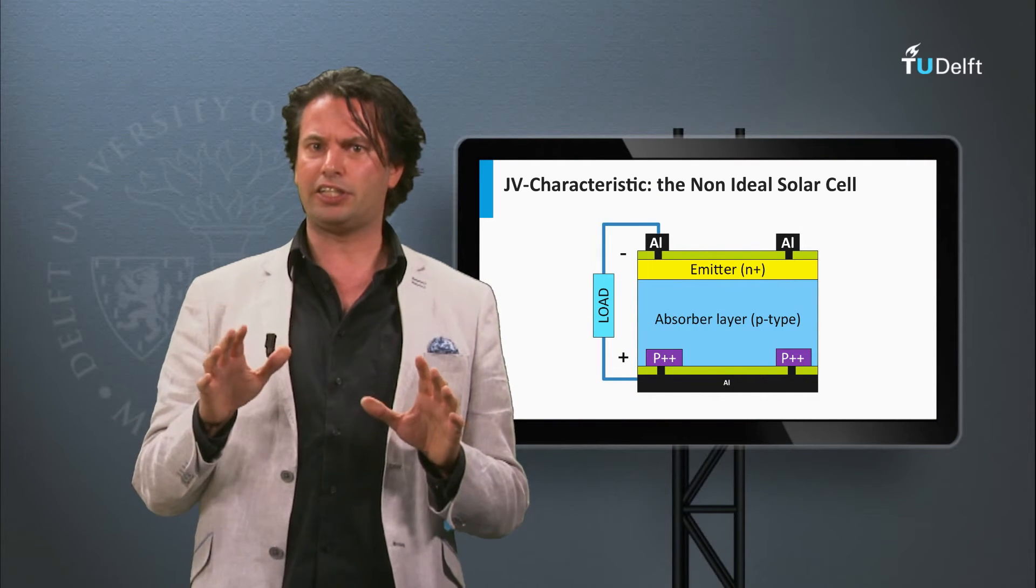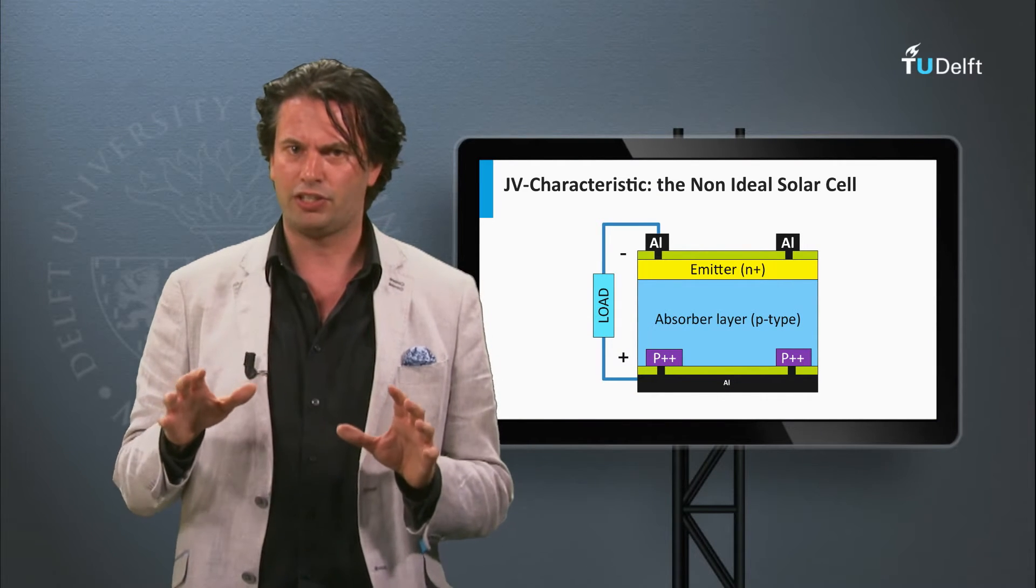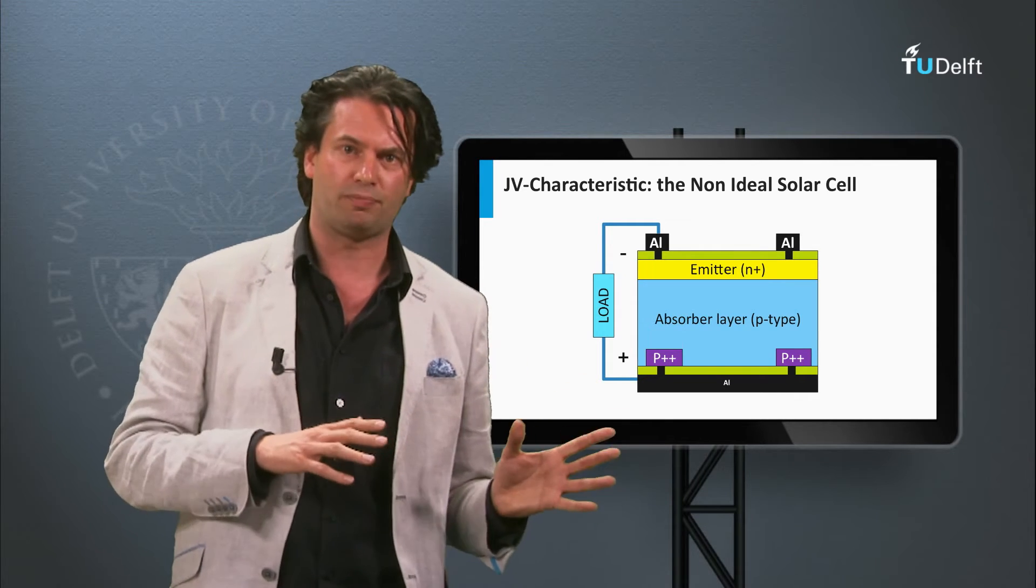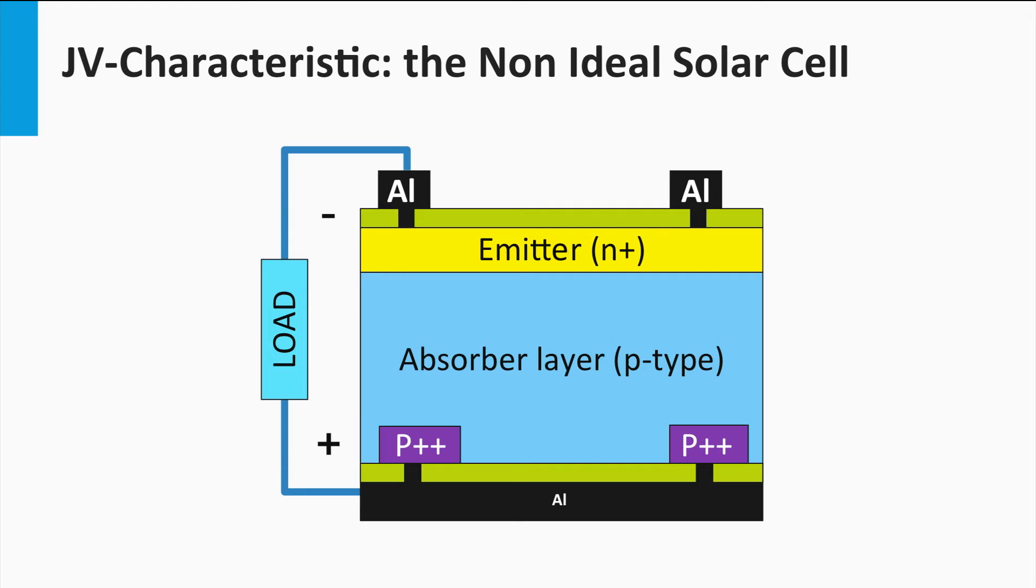The first resistance is called series resistance. Several effects can be the origin of a series resistance in a solar cell. Let's consider a standard crystalline silicon solar cell, which we will discuss in great detail next week. First, the current moving through the semiconductor materials of the p-n junction can experience a resistance. Secondly, the interface between the semiconductor material and the metal contacts can act as a resistor as well. Thirdly, the metal contacts will have a resistance as well.